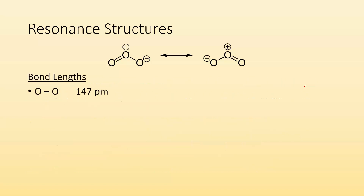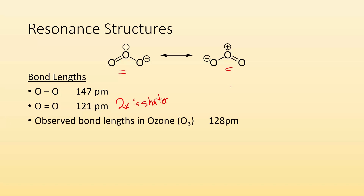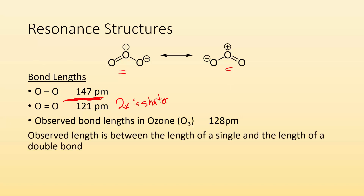So, bond lengths. We know that single bonds tend to be the longest. For an oxygen-oxygen single bond it's about 147 picometers, and the double bond is 121 picometers — so the double bond is shorter. If we're saying the real structure is a mixture of the two, the bond lengths are going to be between single and double bond lengths. The observed bond length for ozone is 128 picometers — somewhere between 147 and 121. It's a mixture of the two.